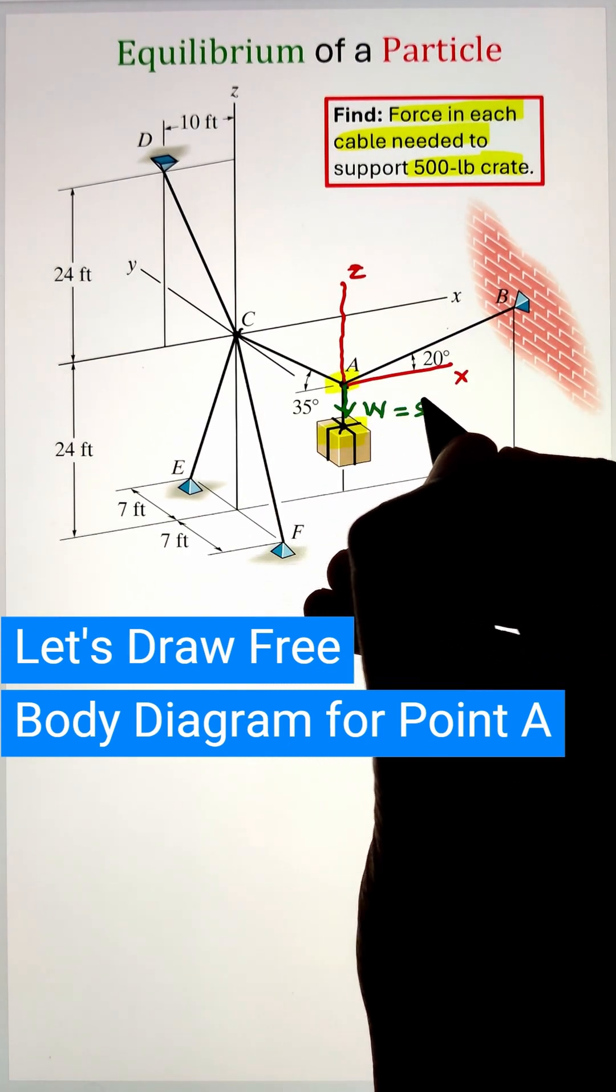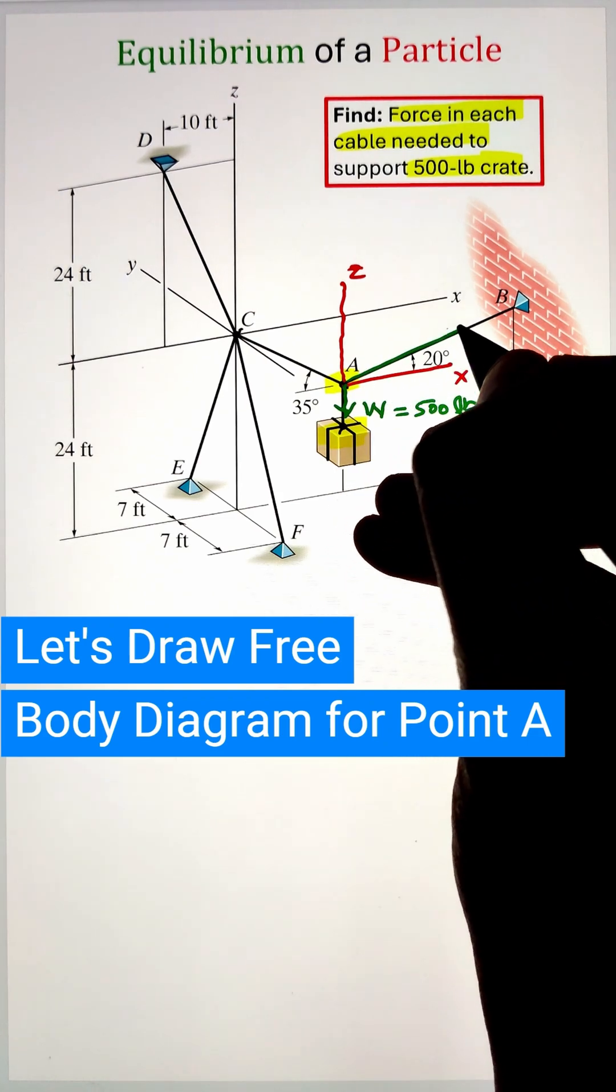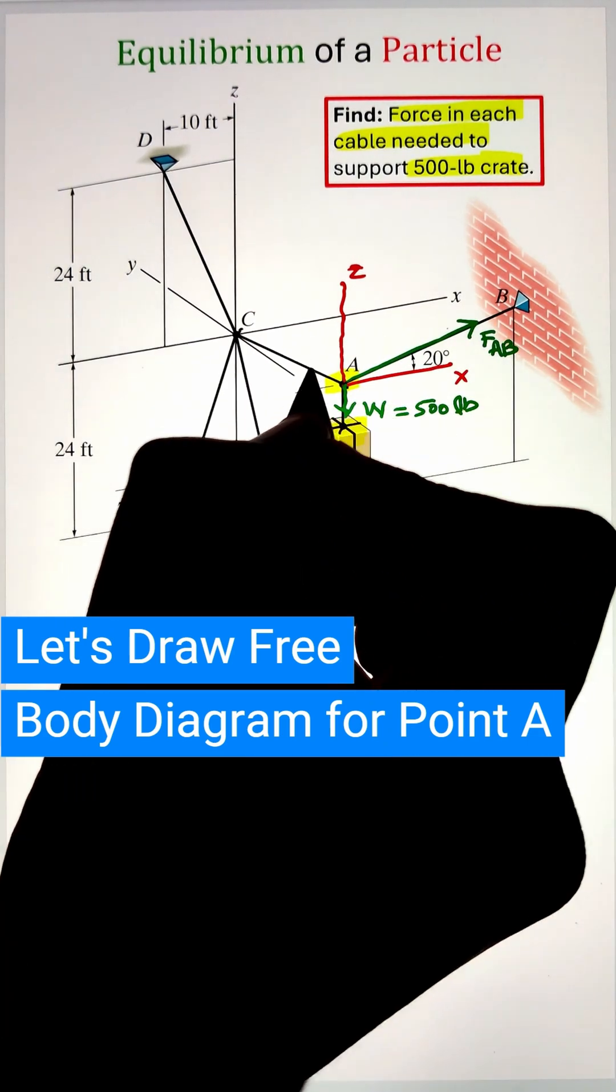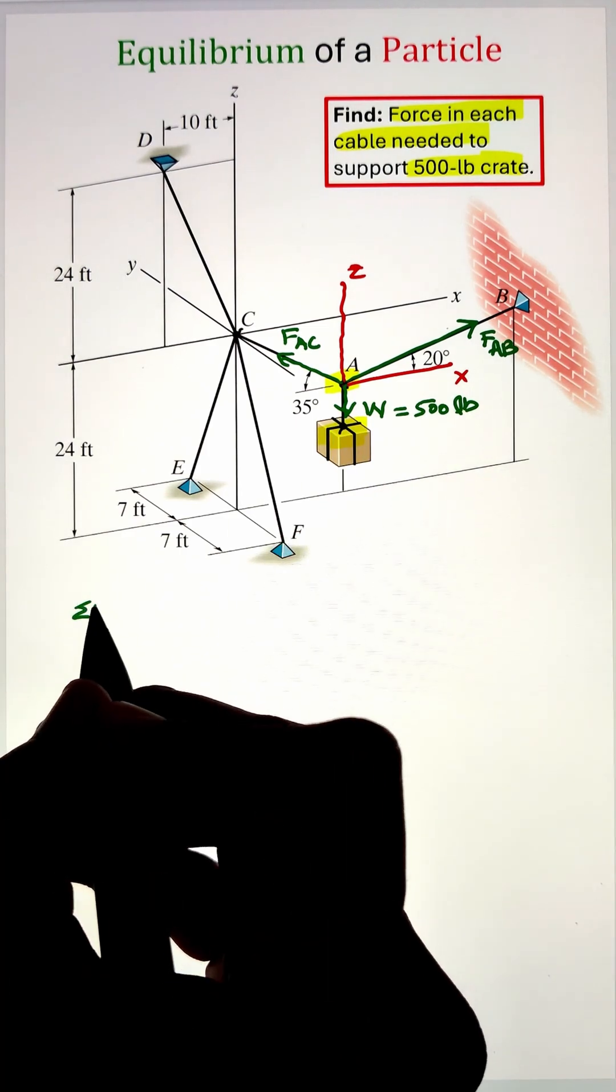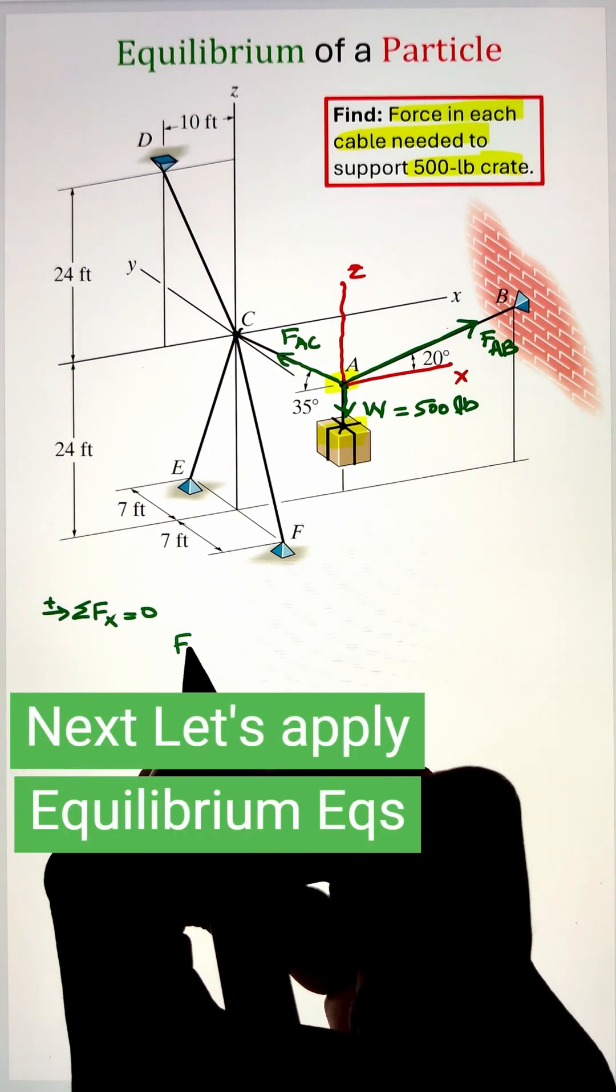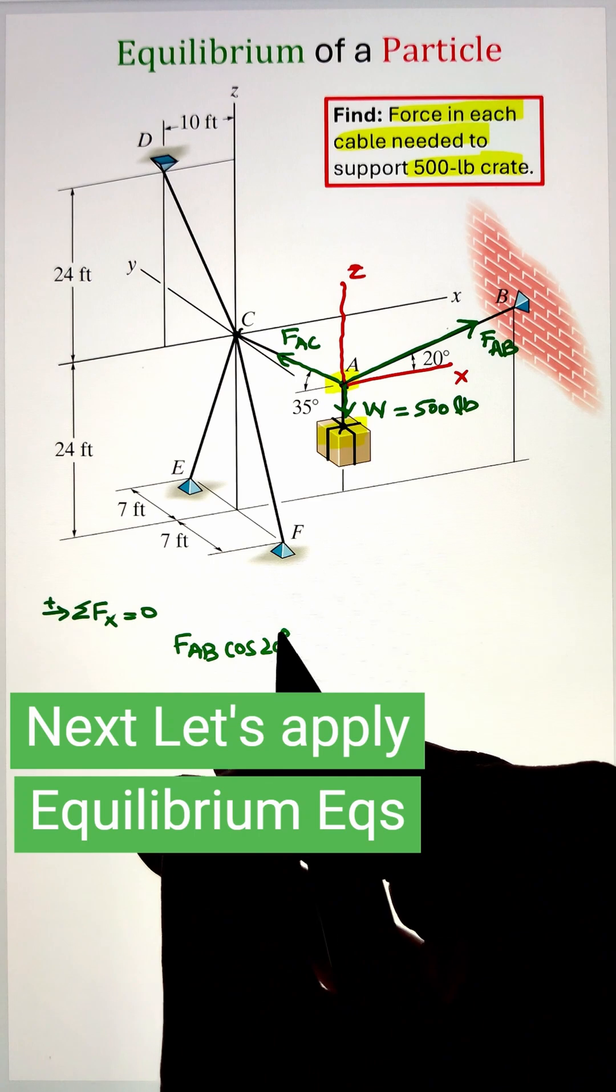Starting with the crate that has a weight of 500 pounds. Next, we have a cable from A to C making an angle of 20 degrees from the horizontal x-axis, whereas the cable A to B makes an angle of 35 degrees with respect to the negative x-axis.